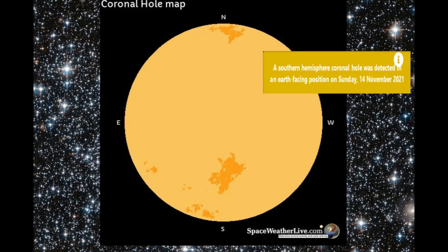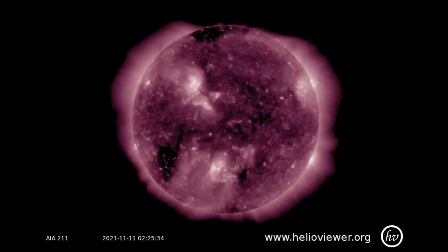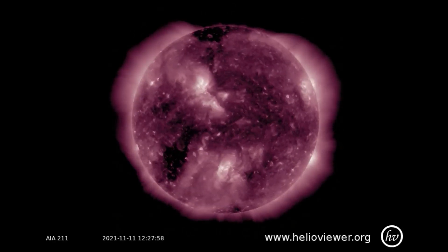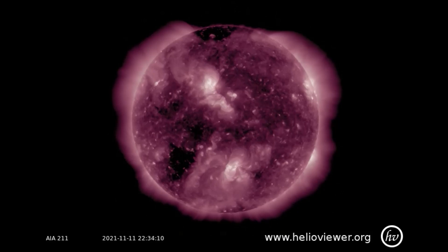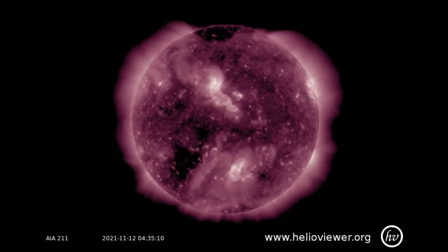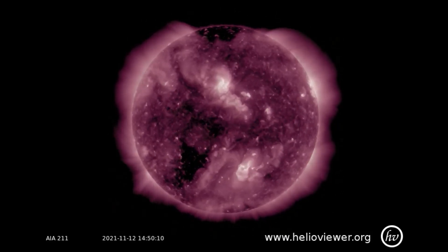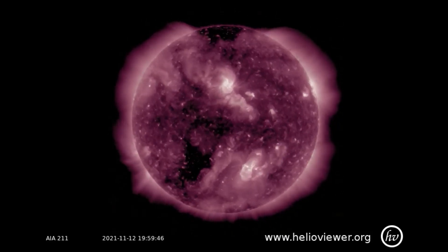There has been a coronal hole alert for today, November 14th. Seen on the coronal hole map is the area of concern; upper right is the alert from spaceweatherlive.com. Observed on the SDO-211 filter is the coronal hole as it rotates into the Earth-facing position from the 11th to the 14th.